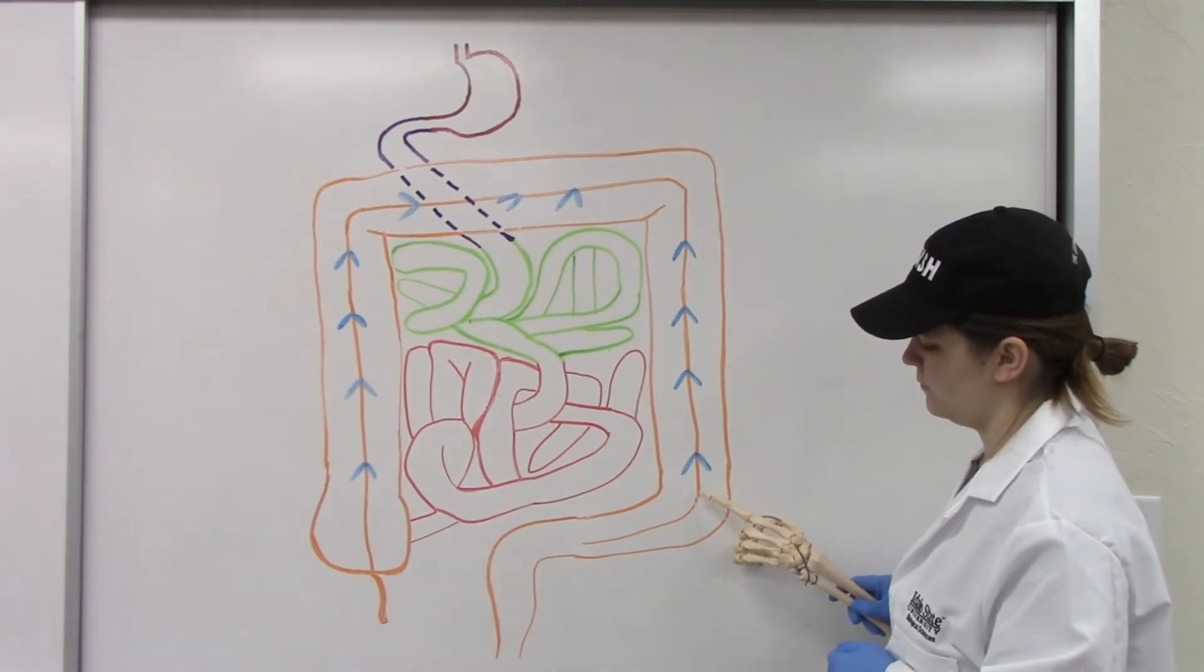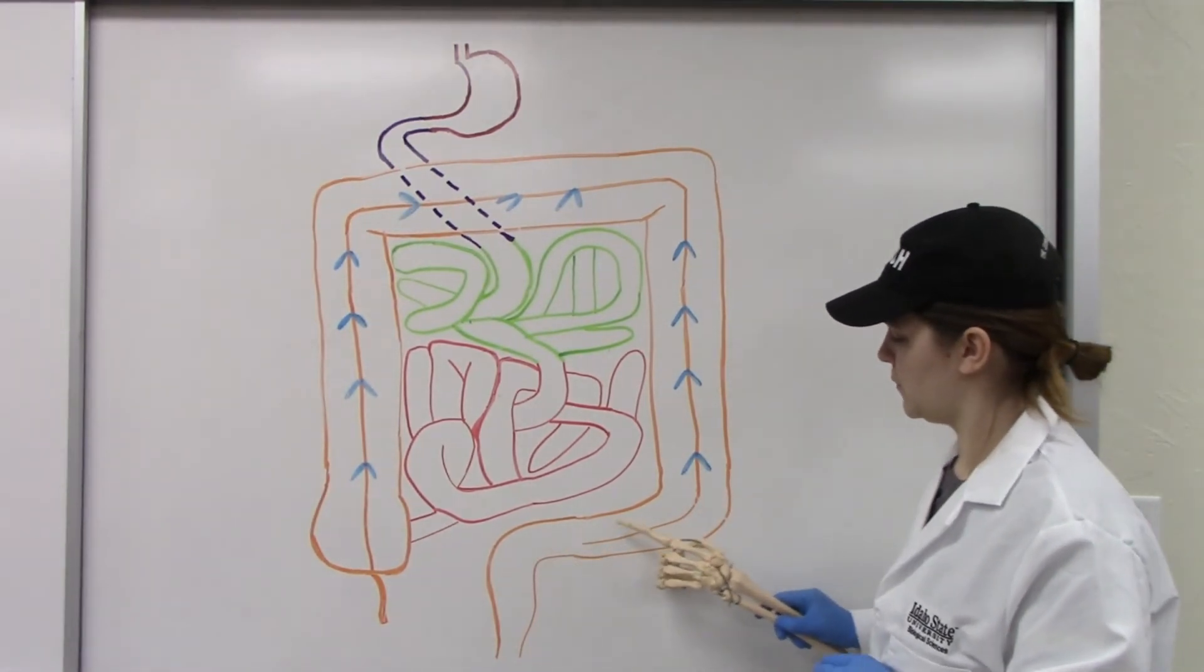Finally, the sigmoid colon makes an S-shape, and we arrive at the rectum.